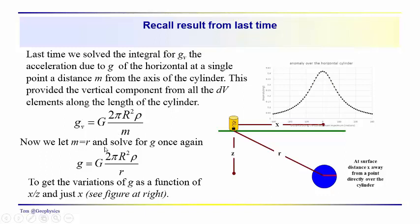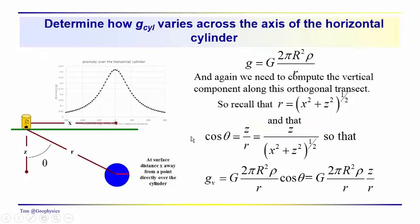Now we're going to let M equal R, and we're going to let the gravimeter now move along a transect normal to the axis of the cylinder, and once again compute the vertical component at each point along the transect. So we'll get G as a function of X over Z, or just X, and we'll find that it's a symmetrical anomaly, like the sphere.